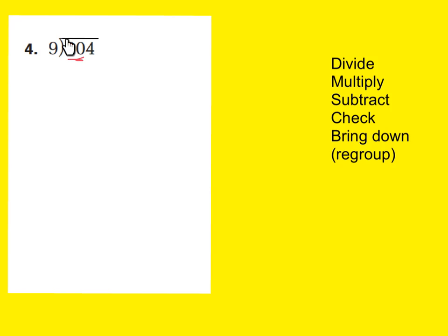So my quotient answer needs to start directly above my tens place. If I have 20 groups of 10 and share them with 9 people, each person gets 2. That's my division step. Now multiply step 2: 2 times 9 equals 18 — I've used up 18 of my long strip pieces. Subtract to see how many strips are left: I have 2 strips left. Check: is 2 less than 9? Yes.